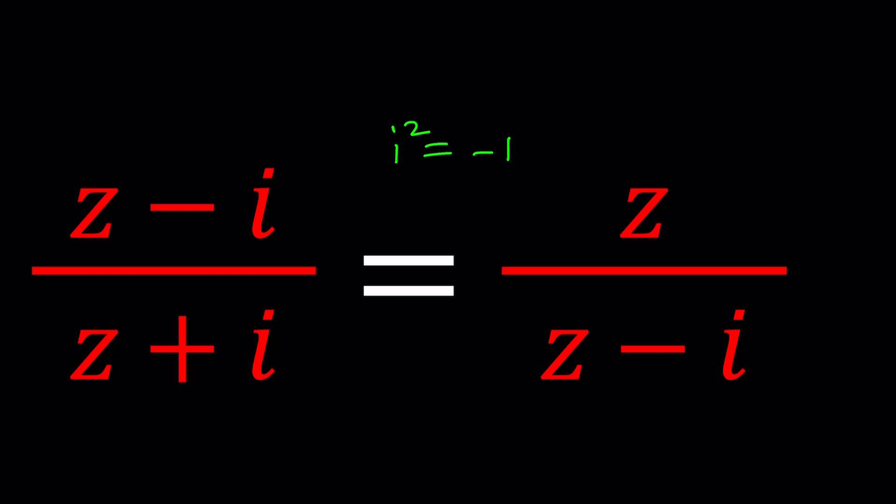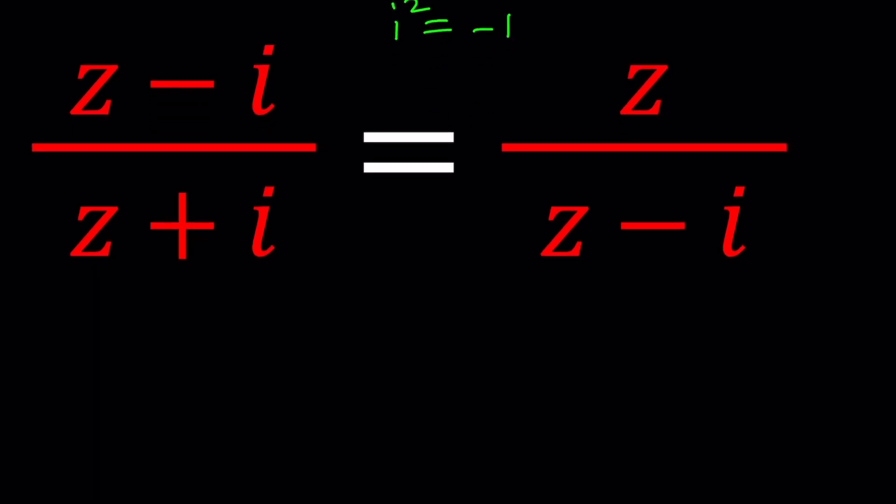Make sense? I say one of the square roots because negative one has two square roots. Think about the other one. Great, so let's start with the first method.